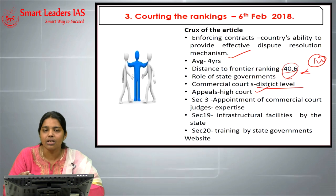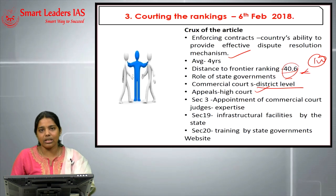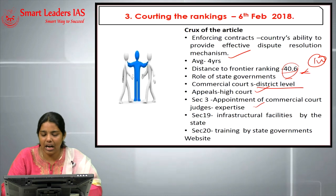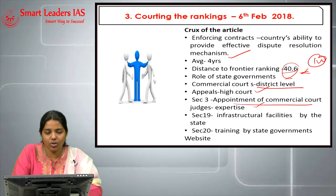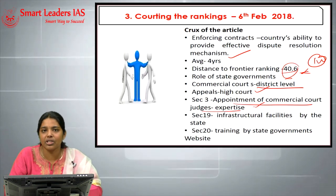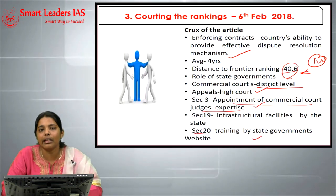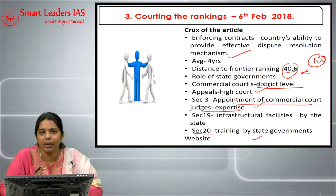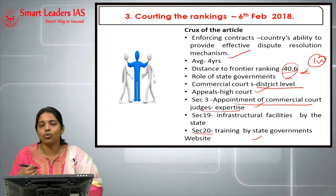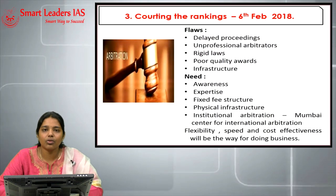The appeals mechanism at the High Court level has not been implemented in many states, and state governments have a responsibility to facilitate it. The 2015 Act in Section 3 mandates appointment of specialized commercial court judges; Section 19 covers infrastructure; Section 20 covers training by state governments; and transparency via website updates is also mandated. These are the loopholes and areas that need to be addressed to improve commercial dispute resolution.